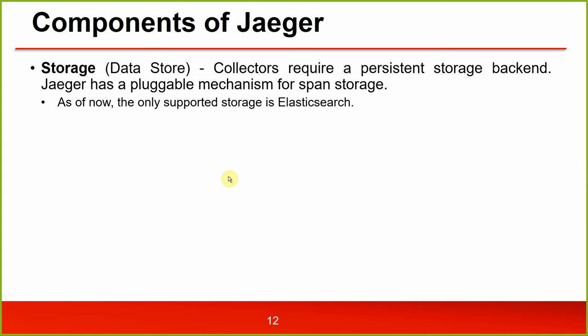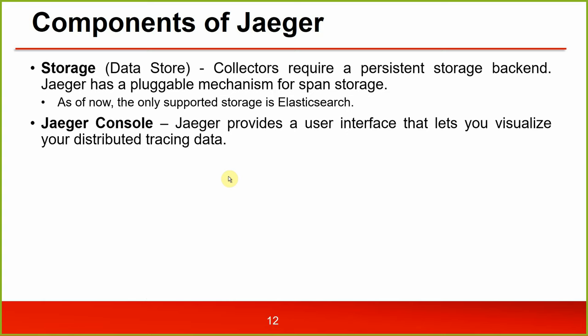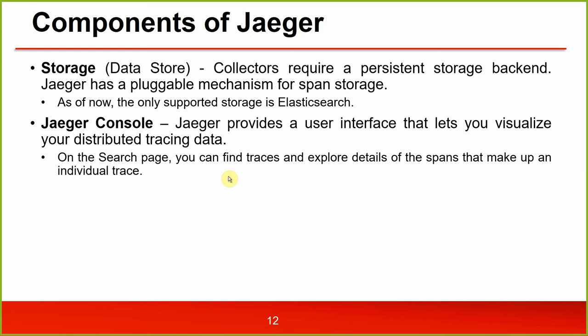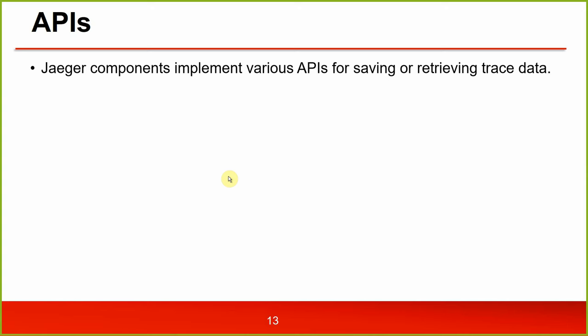Storage is the actual data store. The collector requires a persistent storage backend and Jaeger has a pluggable mechanism for span storage. As of now, the only supported storage is Elasticsearch. Then we have the Jaeger console - Jaeger console provides a user interface that lets you visualize your distributed tracing data. On the search page, you can find traces and explore the details of the spans that make up an individual trace. Then the API - a component implementing various APIs for saving and retrieving trace data.